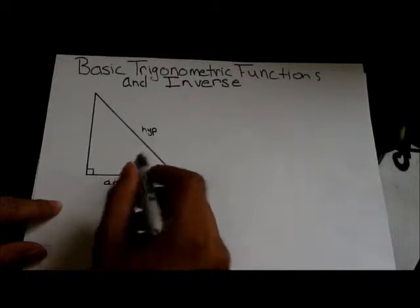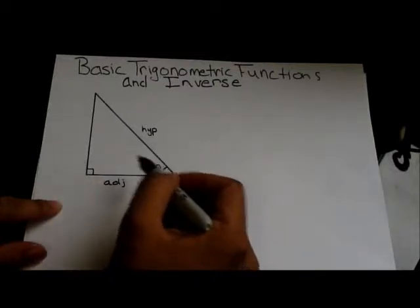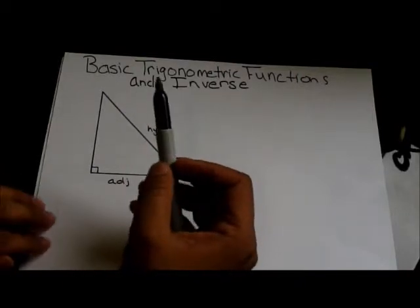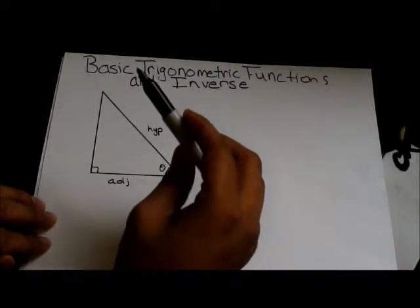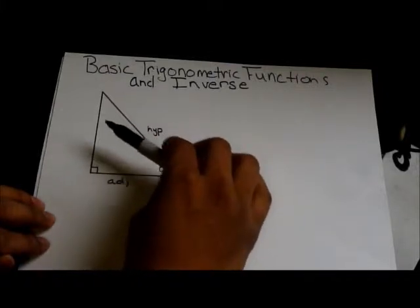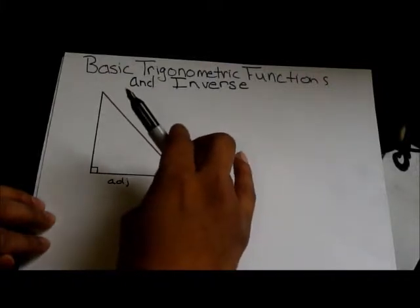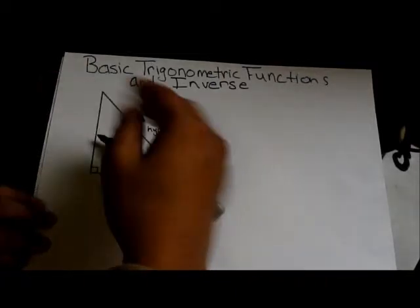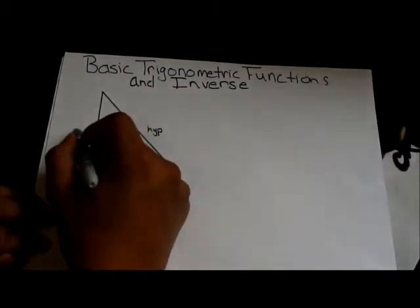There's one more side, which we have not labeled, and this side is the opposite side. Why is it called the opposite? Well, the way I confirm this for myself is that I take a pen and line it up with the corner from where the angle is formed, and it's pointing to the opposite side.